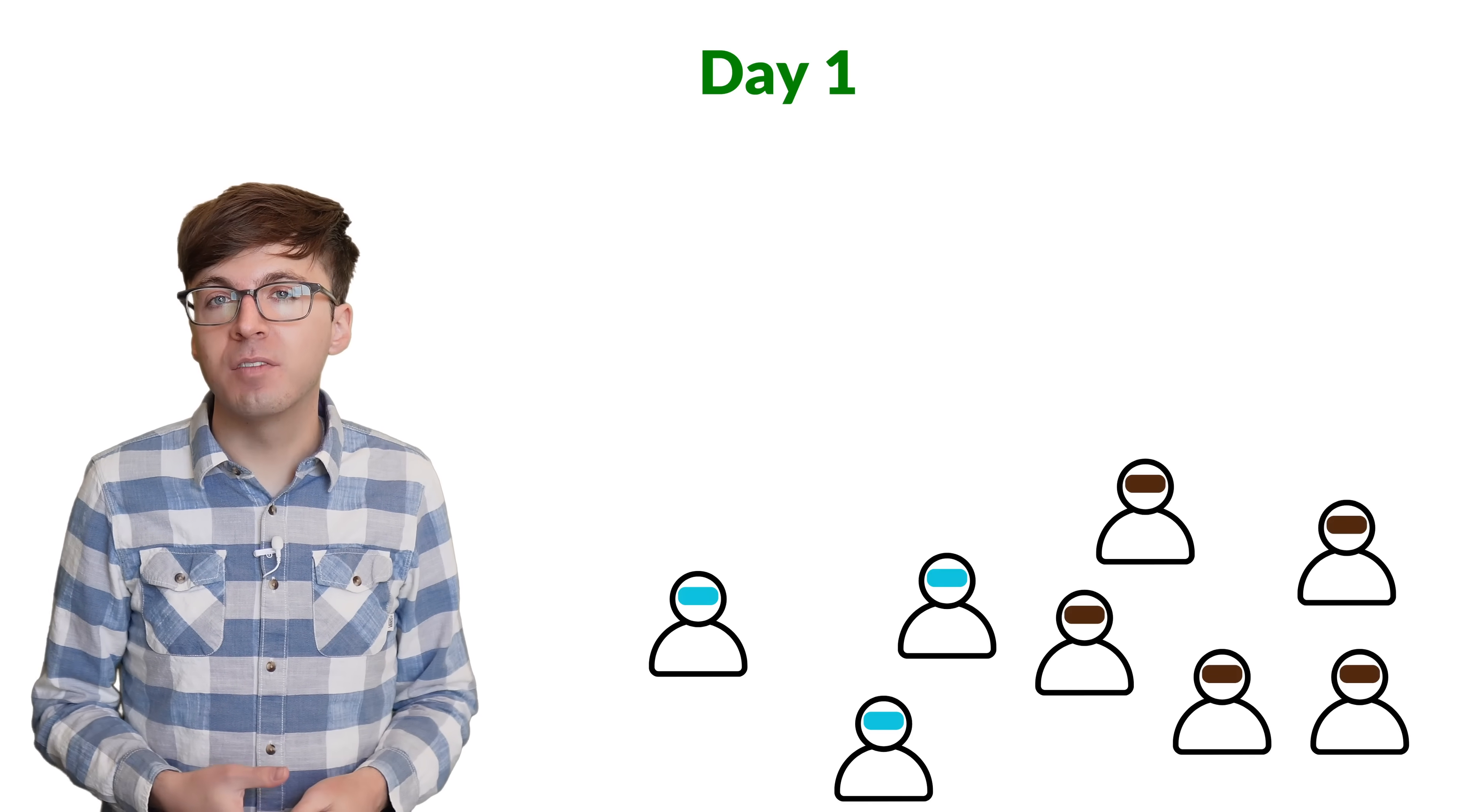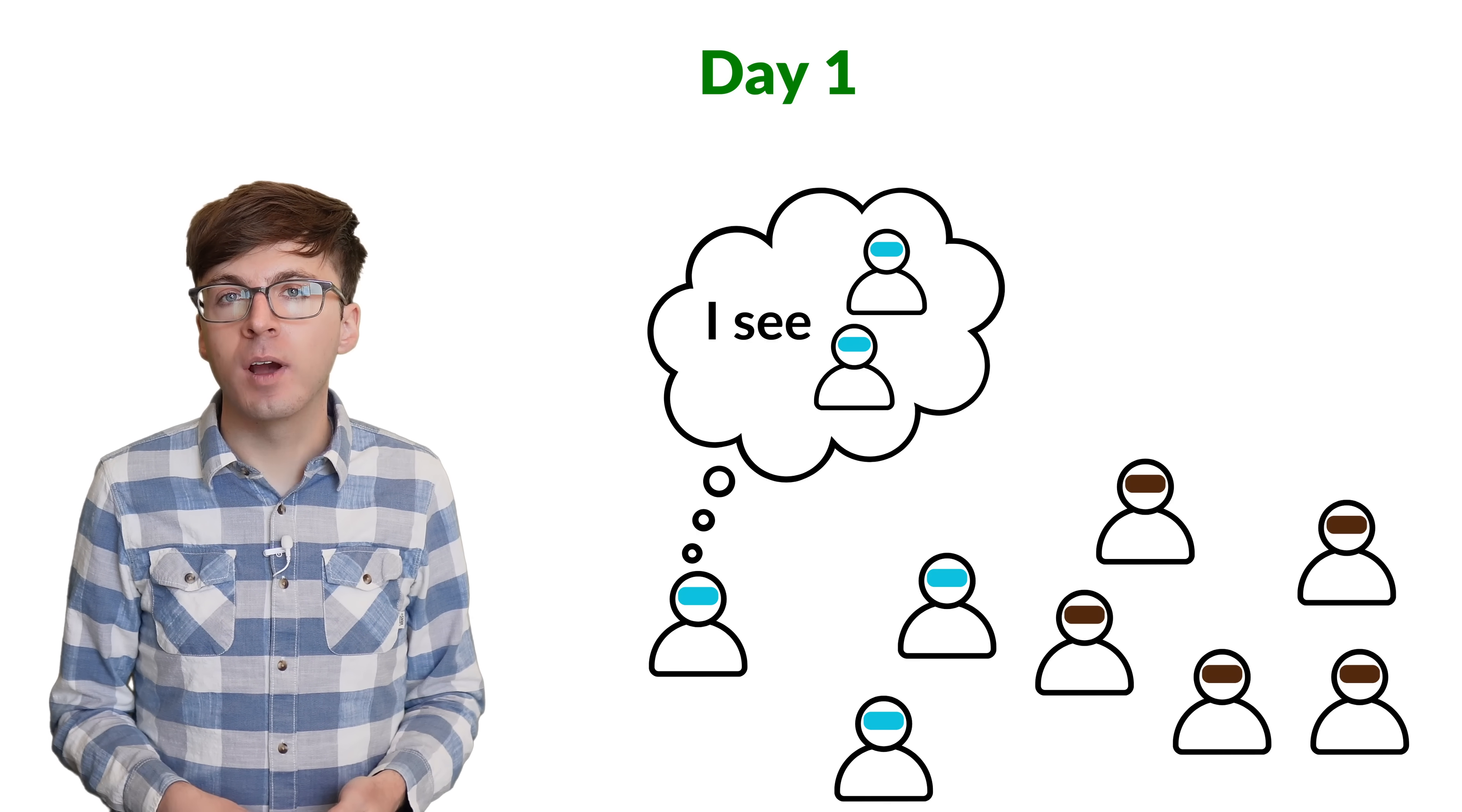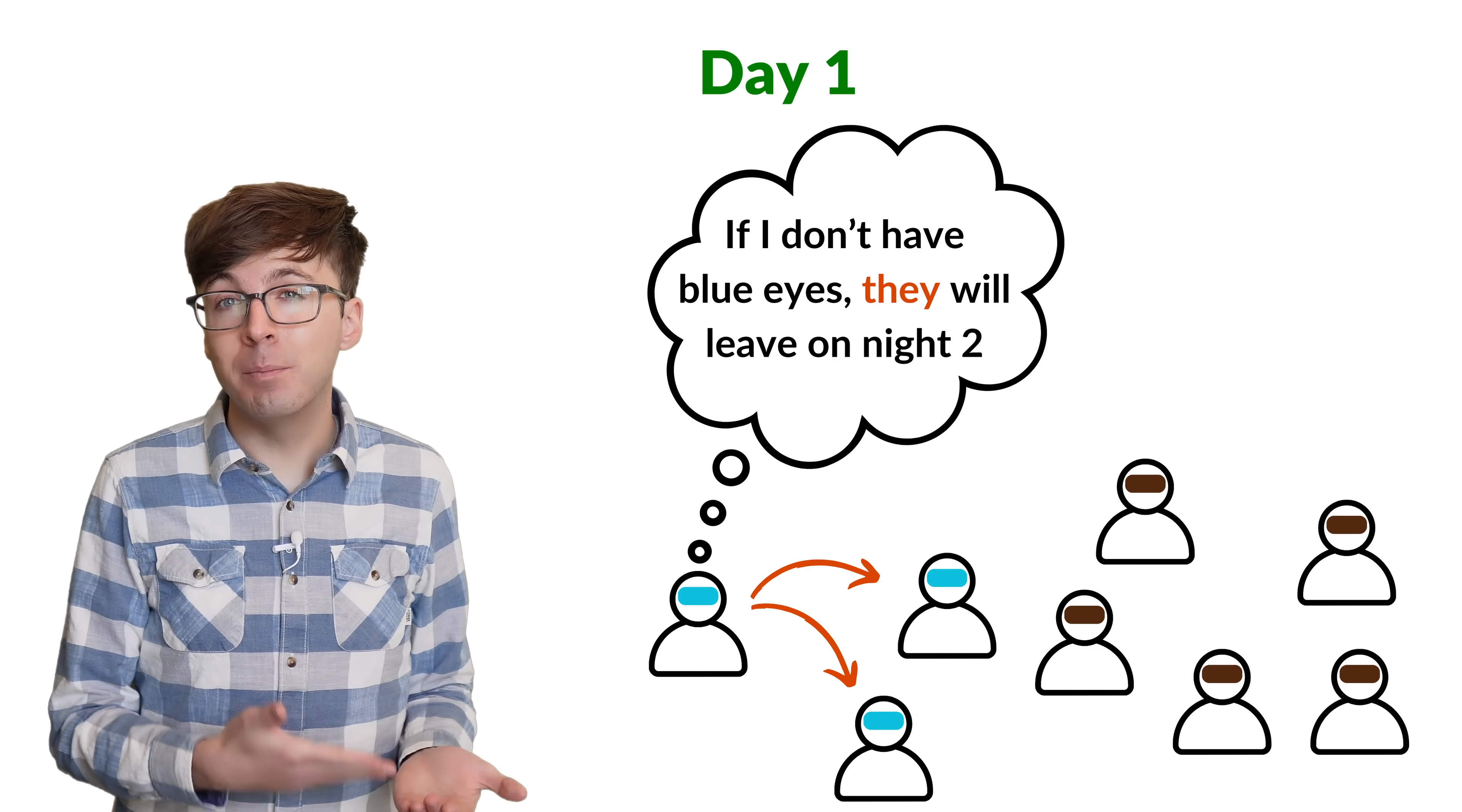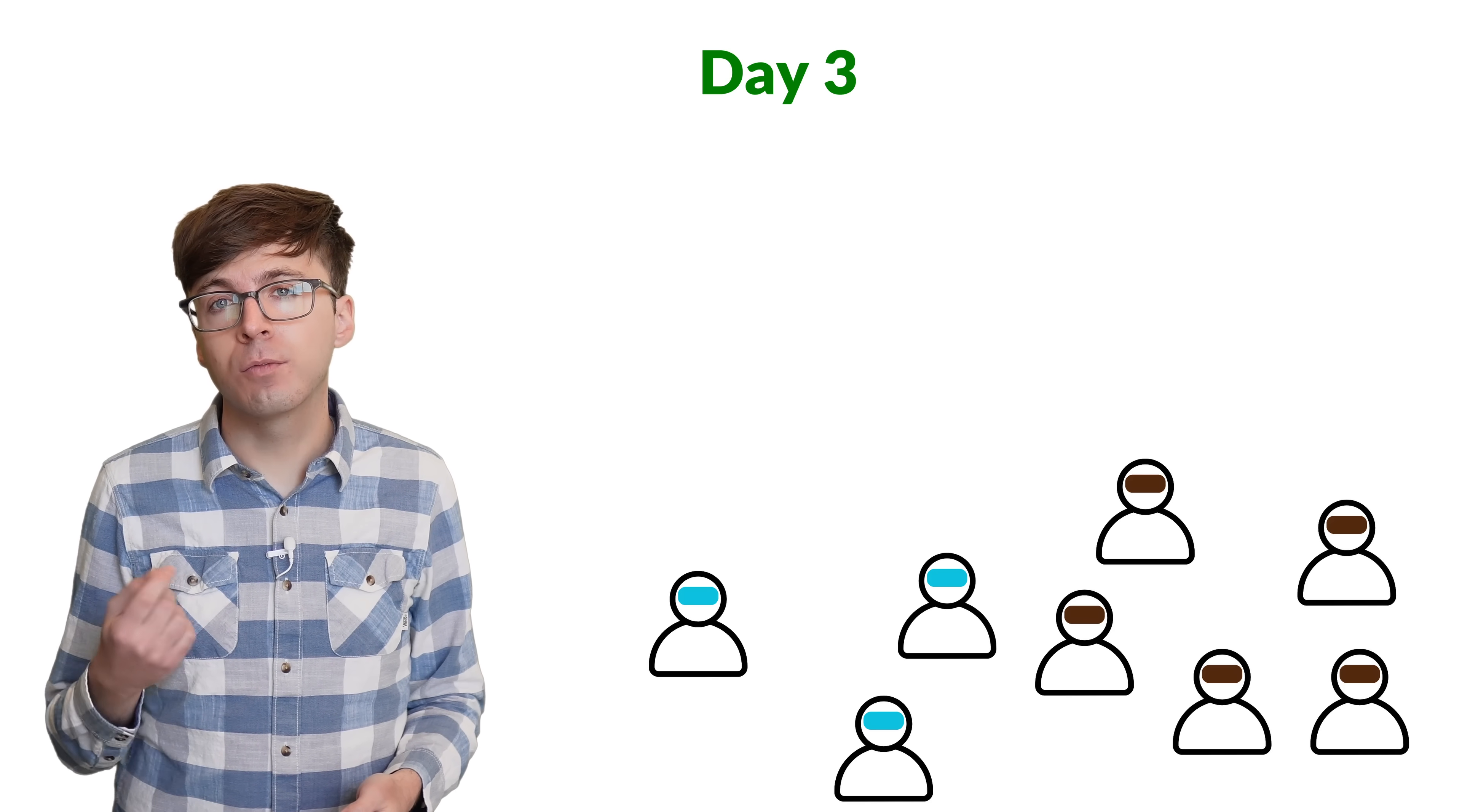Let's see what happens if three people have blue eyes, and then we'll know how to solve the original puzzle. Imagine that you're one of the blue eyed islanders. You see two people with blue eyes. You know that if you have brown eyes, then each of those blue eyed people will leave at midnight on night two. That's the case that we just solved. But they won't leave on night two, because they actually saw two people with blue eyes, rather than one.